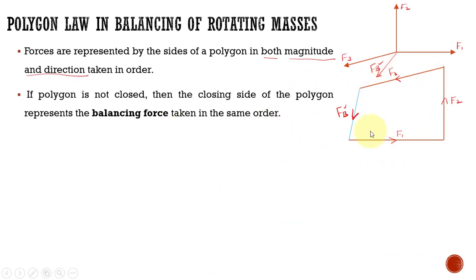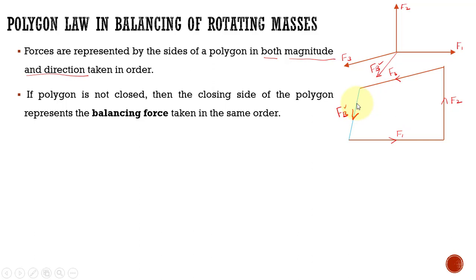After considering this balancing force in the system, the system is in complete balance. By drawing this force polygon, if the polygon is not closed, the closing side represents the balancing force, taken in the same order. I represent this in the angular position of forces and show the balancing force in the same direction. The given system has a resultant force, meaning it is unbalanced, and we make it balanced by adding this balancing force.